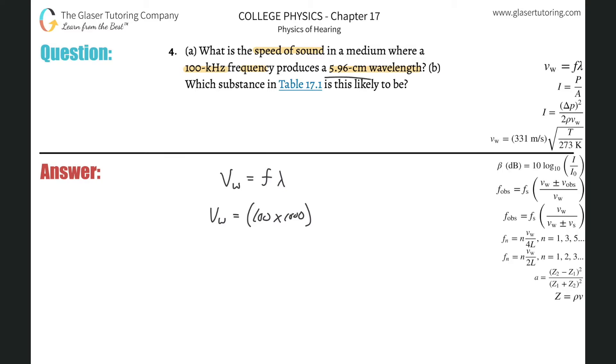And then the wavelength - that was given in centimeters, but we need that in meters, so we've got to move the decimal two places to the left, or divide it by 100. So 5.96 over 100.